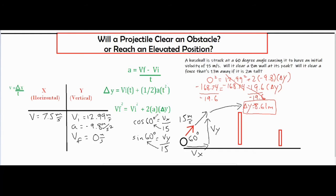I used the time-independent formula: VF² = VI² + 2a·Δy. I plugged in VF = 0, so zero squared is zero, and VI = 12.99 m/s, so 12.99² = 168.74. Subtracting gives negative 168.74 on one side, and combining with negative 9.8 gives negative 19.6. Dividing both sides by negative 19.6 gives delta y = 8.61 meters — clearly larger than 8 meters, so the answer is yes, it clears the wall.